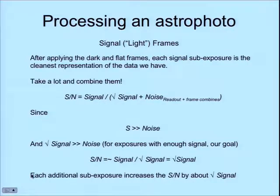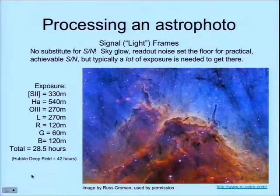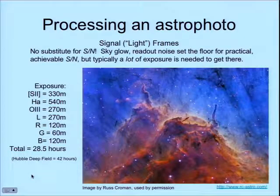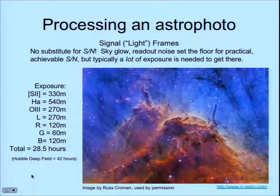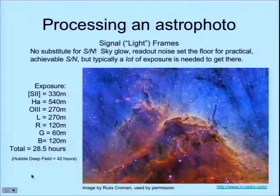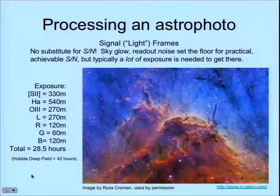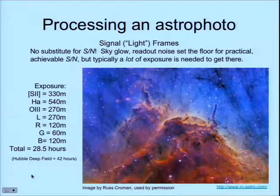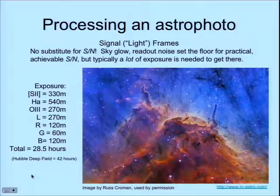This is what you get if you stack a lot of signals. This is taken by Russ Croman, who takes fantastic astrophotos from a remote observatory in New Mexico. He spent 28.5 hours of exposure time on this image. For comparison, the Hubble Deep Field was 42 hours of exposure. He combined narrow-band filters with broadband filters and a luminance frame. A lot of the color in astrophotography is an interpretation — no one really knows what the color of things in space looks like to the naked eye, so you combine whatever set of exposures and wavelengths you want to show structure or make a scientifically interesting picture.